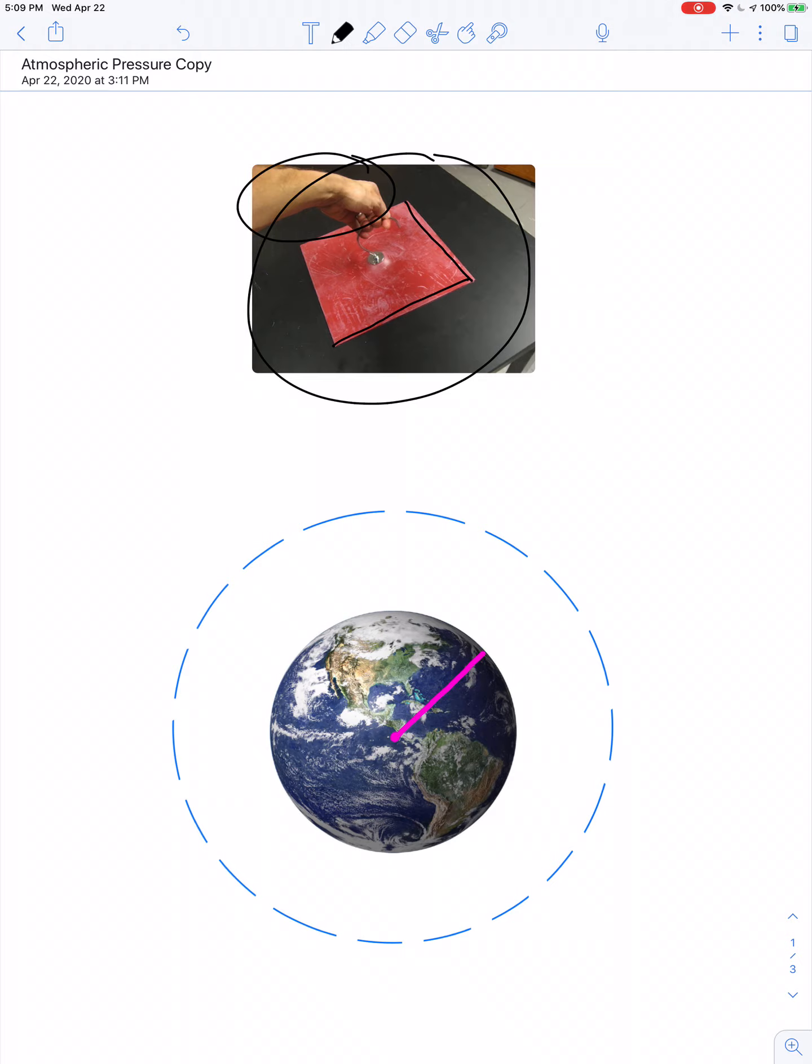In our last lesson, you learned that the radius of the Earth is about 4,000 miles. So here's an exaggerated picture of the thickness of our atmosphere, because the atmosphere extends at most 200 miles.